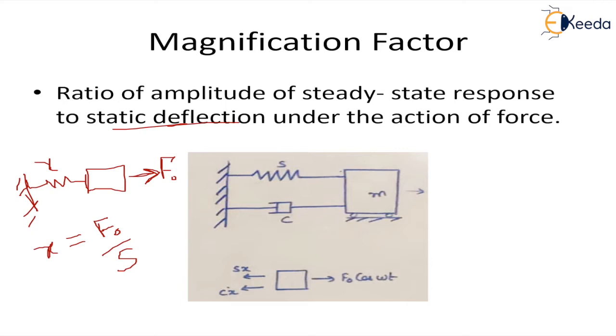Now steady-state response is the one in which the forced vibration is there. If we draw the free body diagram, this is the lumped system where there is a mass with a spring and a damper, and if a harmonic force is acting on the system, let's say F0 cos omega t.